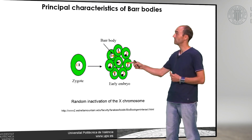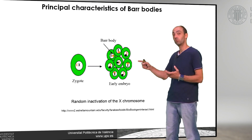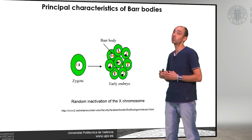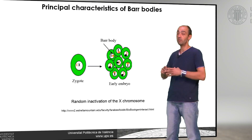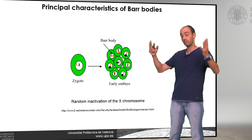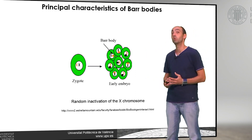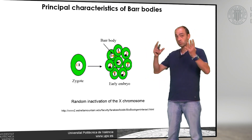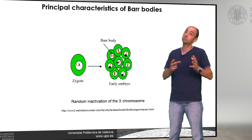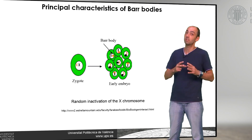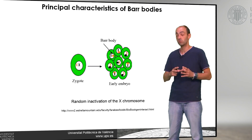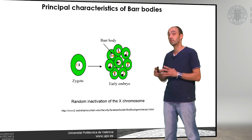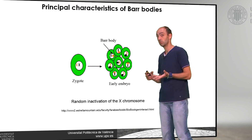The cells that divide from these cells will all have the same chromosome inactivated. For example, in this cell, all of the daughter cells will have the orange chromosome inactivated. This means that at the end, the body of a female is a mosaic, where in some parts of the body one chromosome is inactivated and in other parts the other chromosome is inactivated.